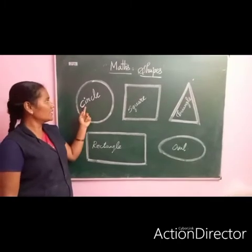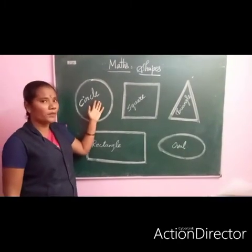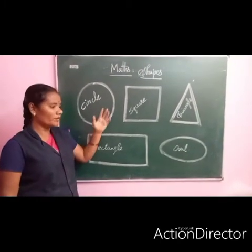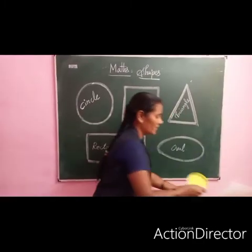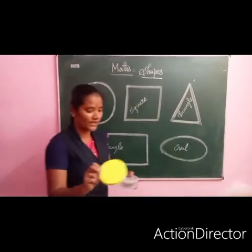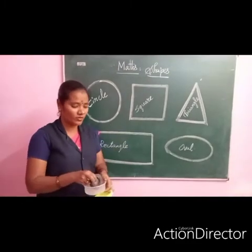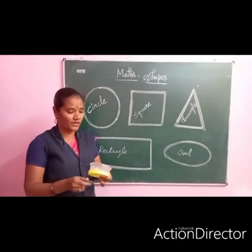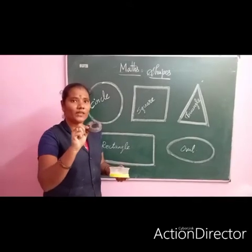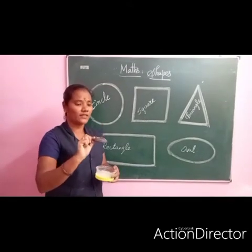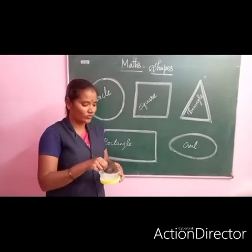Okay, listen. Circle — for example, plate. We use plate at home. Then with this one, with a box. This is another circle example. Also the burner — we use the gas cylinder. That one is also a circle.